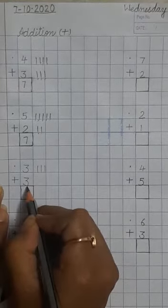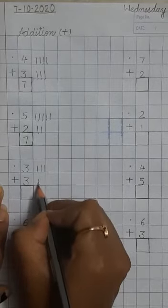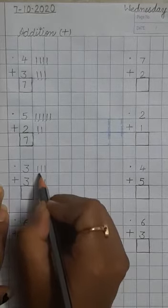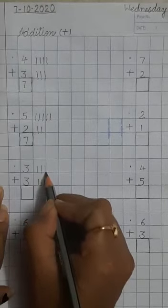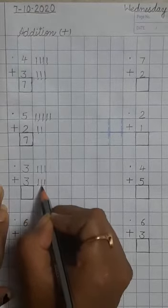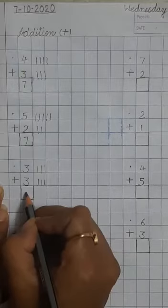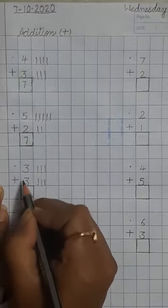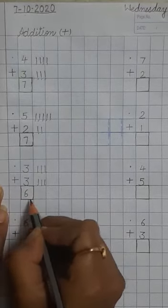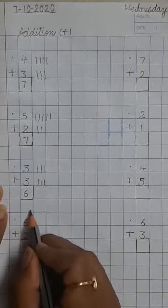4, 5, 6. 3 plus 3 is equal to 6. Leave a line here.